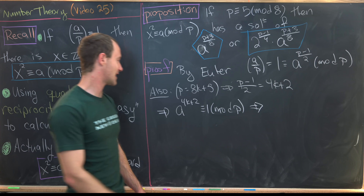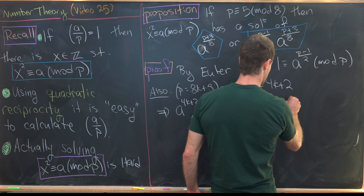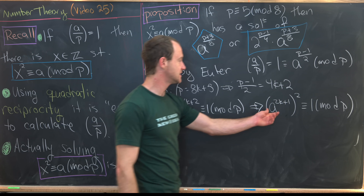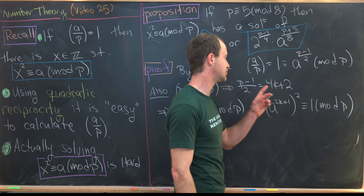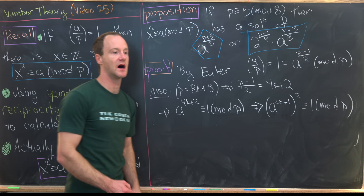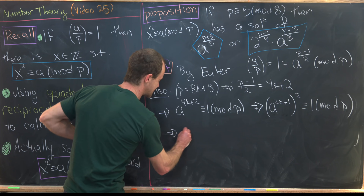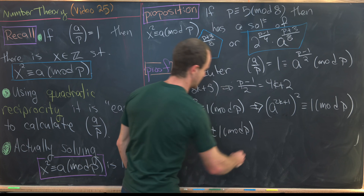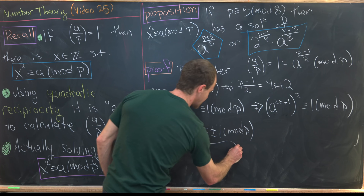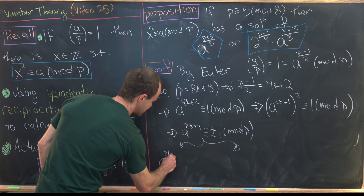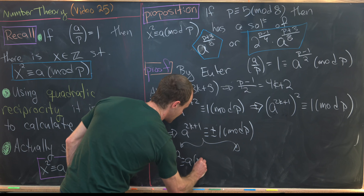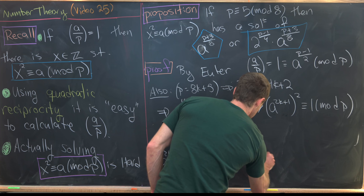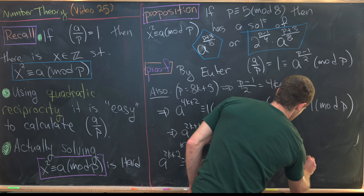This tells us that (a^(2k+1))² ≡ 1 mod p, so a^(2k+1) is a solution to x² ≡ 1 mod p. Because of the type of prime we have, a^(2k+1) ≡ ±1 mod p. This clearly splits into two cases: multiplying both sides by a, we get either a^(2k+2) ≡ a mod p, or a^(2k+2) ≡ −a mod p.